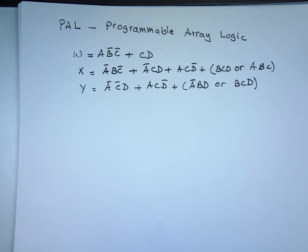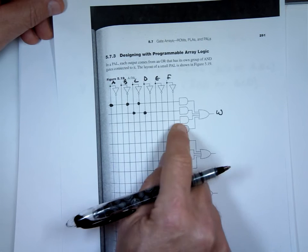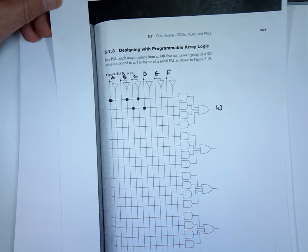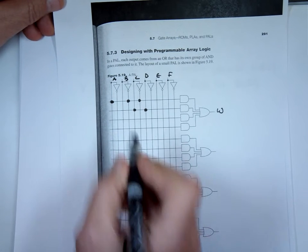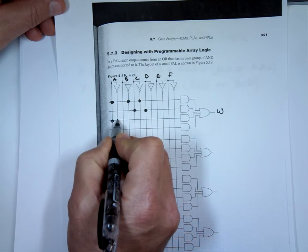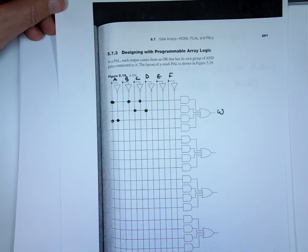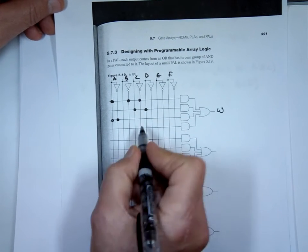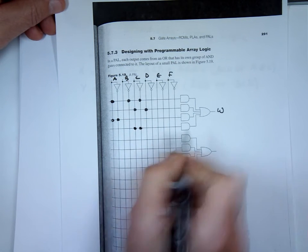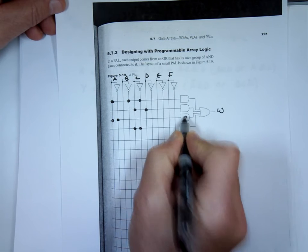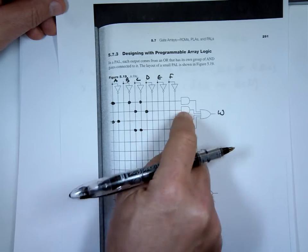I'm nervous about the unused AND gates turning to one somehow. I can block them — you connect them like A and A-bar to it, because one will be one and one will be zero. You can do the same with B and B-bar, or C and C-bar. That guarantees those unused gates are always zero, so W only depends on its two used AND gates.